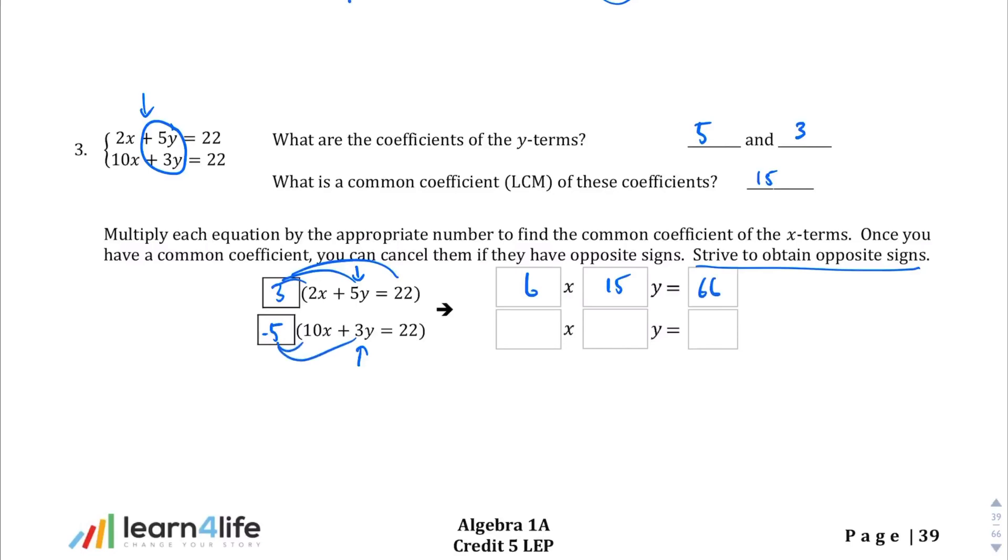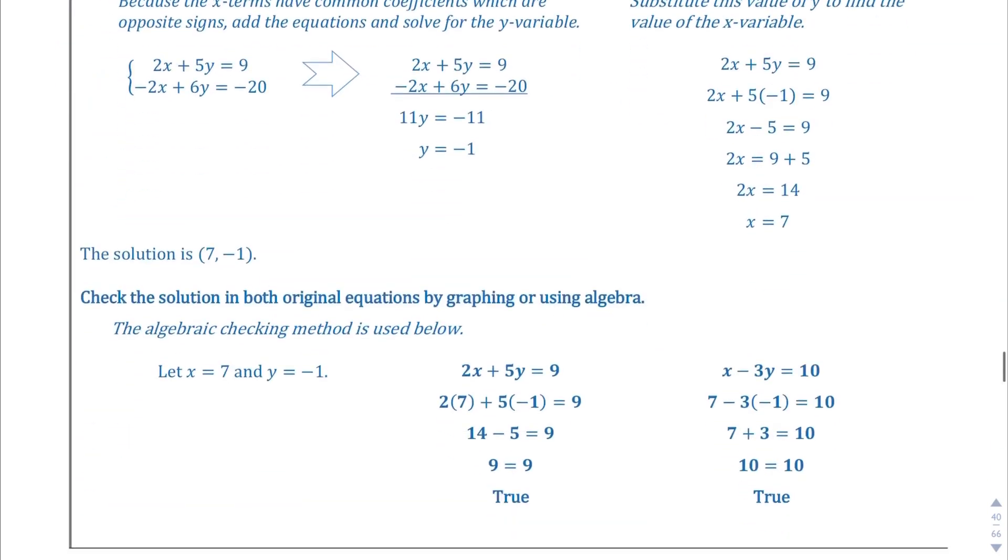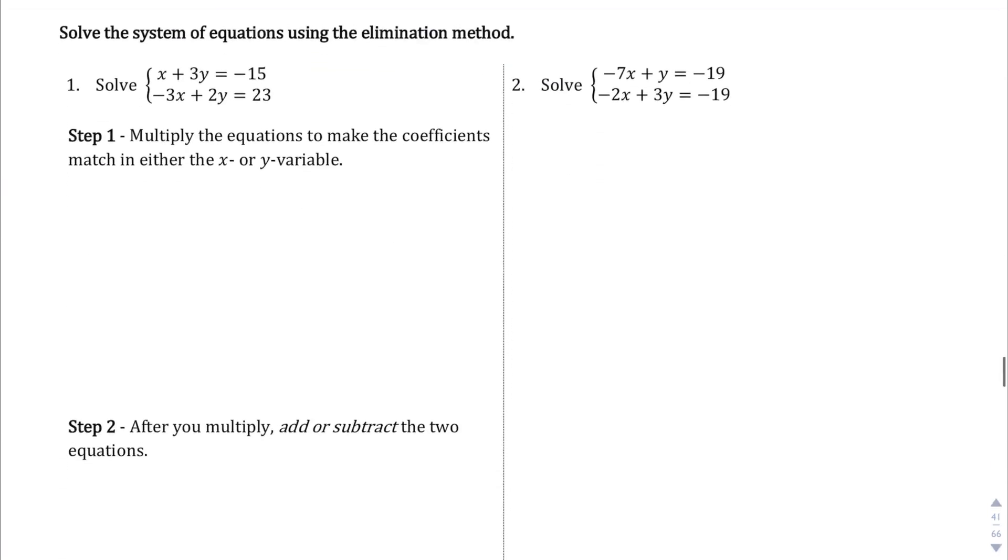And then we'll distribute that negative 5. So negative 5 times 10 is negative 50x. Negative 5 times 3y is negative 15y. And then negative 5 times 22 is, what is that, 110? Or negative 110, sorry. And then we're nicely set up, right? Because that will eliminate the y's for us. On the next page, or so, this is more explanation, but on page 41 is when we're going to actually solve.